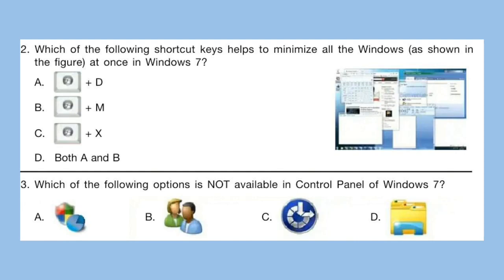Question 2: Which of the following shortcut keys helps to minimize all the windows as shown in the figure at once in Windows 7? The correct answer is option D — both A and B. Question 3: Which of the following options is not available in the control panel of Windows 7? The correct answer is option D.